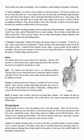Warning signals are used to scare away predators and to warn other animals. Many will call out with a warning call, while others may warn each other by a visual cue like raising a tail. Some animals are poisonous, taste bad, or have a painful bite or sting. Many of these animals are brightly colored with bold patterns. These colors serve as a warning to predators — after one bad experience with a prey's sting, spray, or poison, a predator will usually learn to recognize the colors and leave it alone.